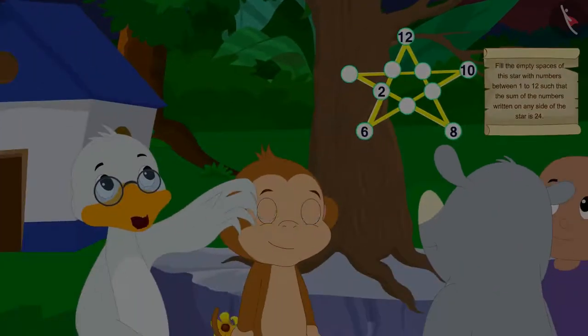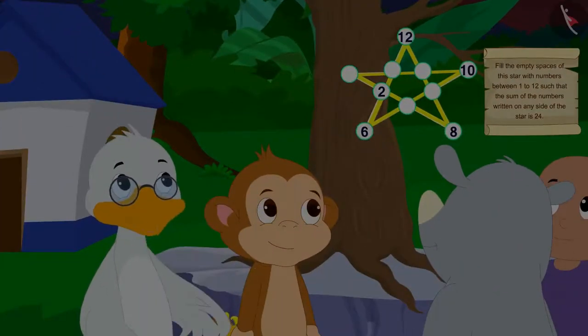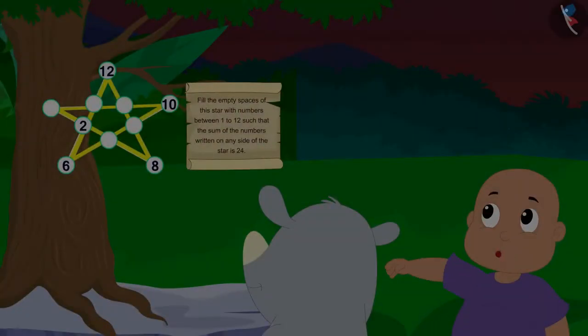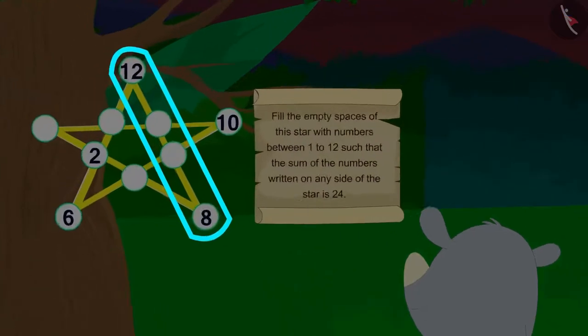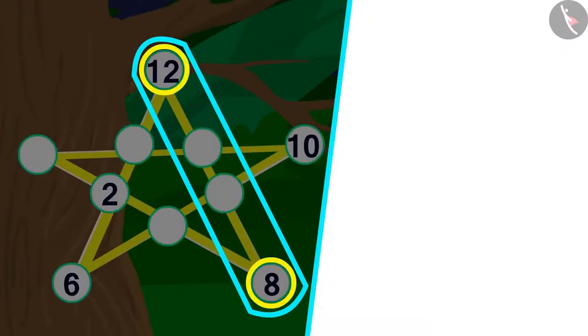Let's all try to fill these empty spaces together, uncle told all the villagers. Look uncle, on this edge, there are two numbers. 12 and 8 are already written.